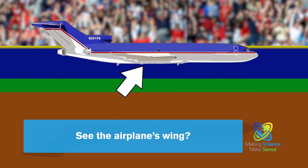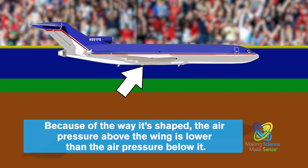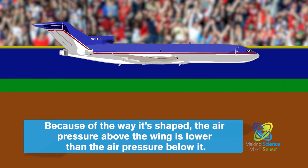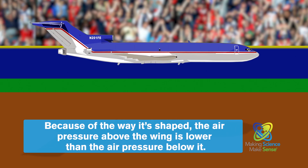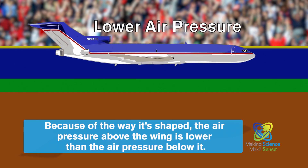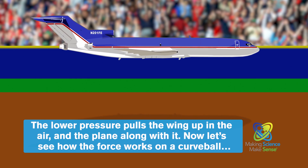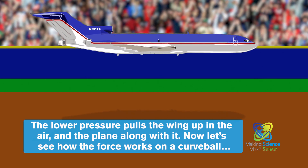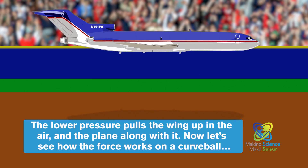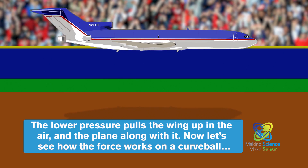See the airplane's wing? Because of the way it's shaped, the air pressure above the wing is lower than the air pressure below it. The lower pressure pulls the wing up in the air, and the plane along with it.